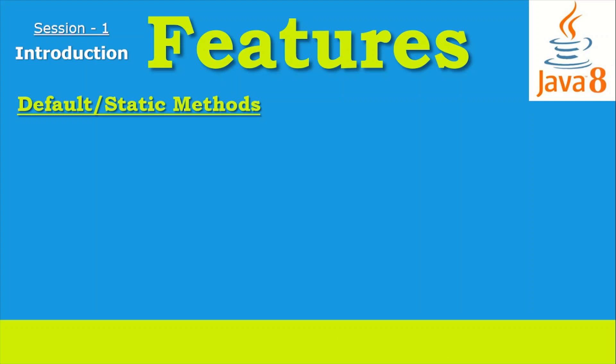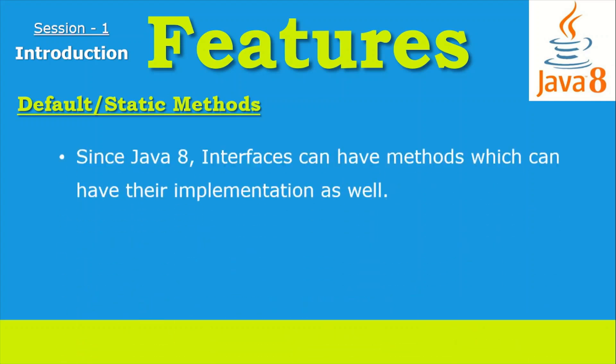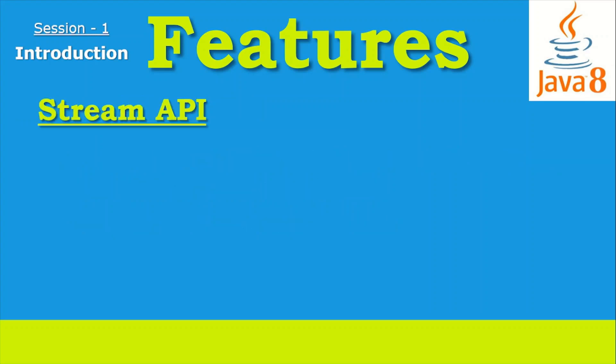The next main feature introduced in Java 8 was default and static methods in interfaces. This feature enables us to add new functionality to interfaces without breaking the existing contract of implementing classes. Methods defined inside interfaces and tagged with the default keyword are known as default methods. These are non-abstract methods and can have method bodies.